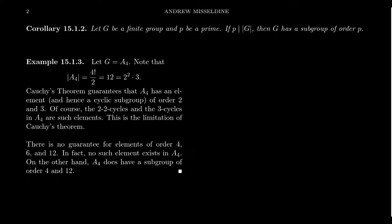Coming back to A4: its order is 12, and its prime divisors are 2 and 3. By Cauchy's theorem, there is a subgroup of order 2 and a subgroup of order 3. Specifically, the three 2-2 cycles in A4 have order 2, and the eight 3-cycles have order 3. By Lagrange's theorem, no other prime orders can appear in A4. So 2 and 3 are the only prime orders and both are realized. That's the limitation of Cauchy's theorem — it can't guarantee a subgroup of order 6, which is not present in A4.